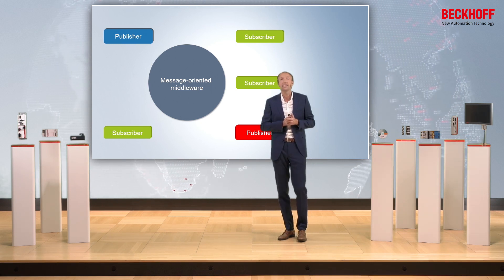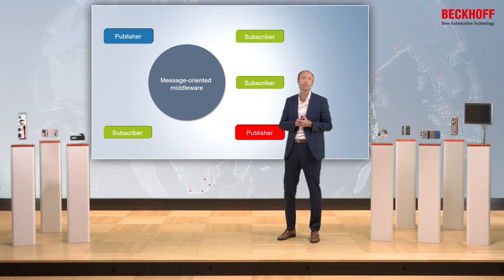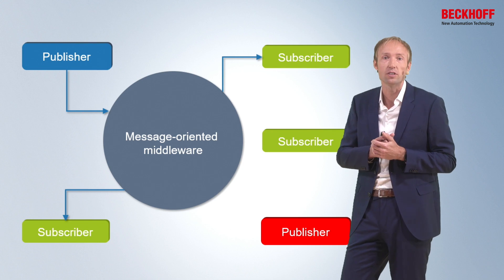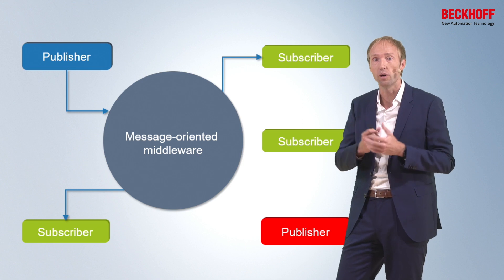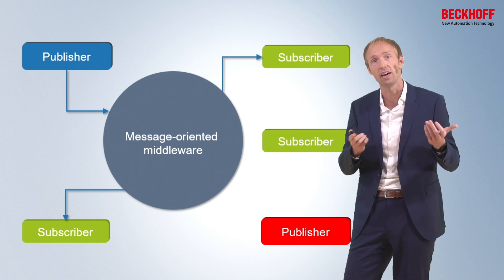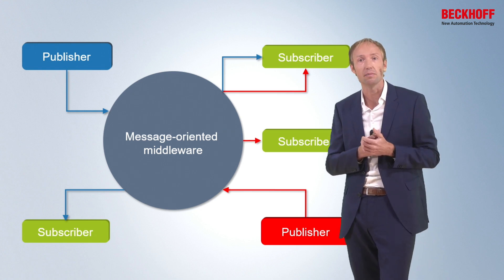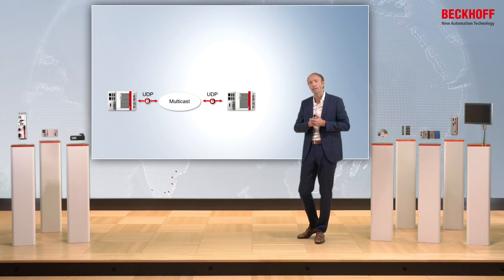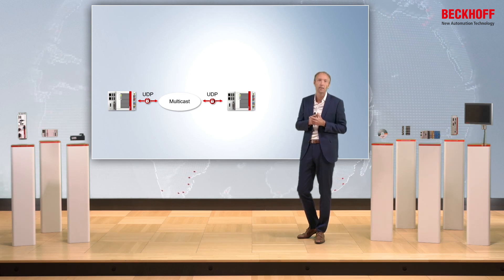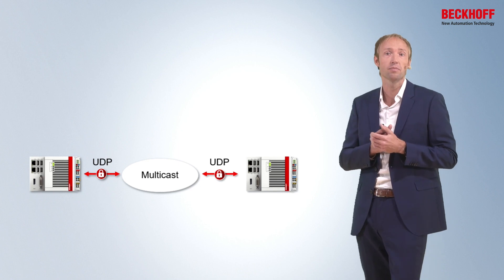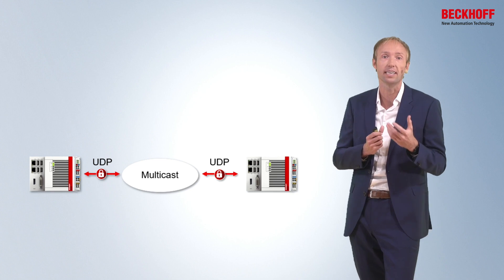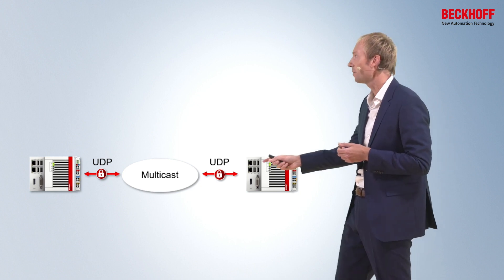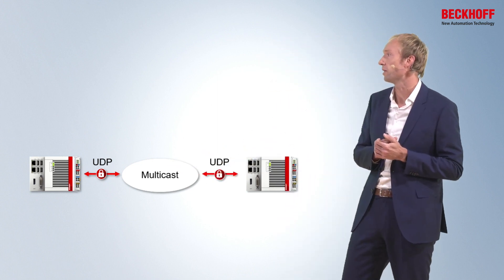OPC UA PubSub applications are decoupled based on publisher-subscriber communication patterns. Applications can assume the role of a publisher and/or subscriber in order to send or receive messages. Publisher applications can send messages to a message-oriented middleware without any knowledge of what subscribers there may be. Similarly, subscribers express interest in specific types of data and process incoming messages without knowledge of what publishers there might be. OPC UA PubSub supports two different middleware variants: the first is broker-less, where the infrastructure routes datagram-based messages — typically using UDP multicast.